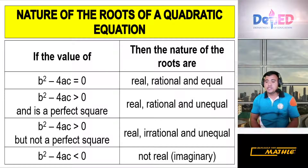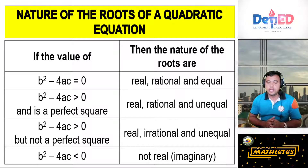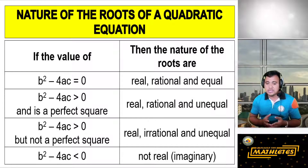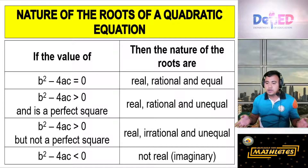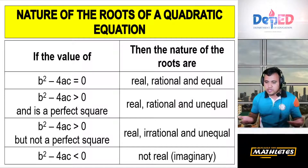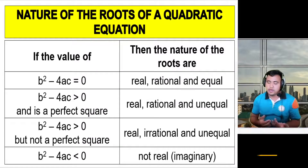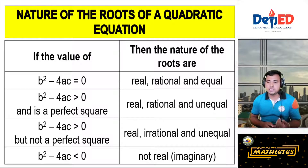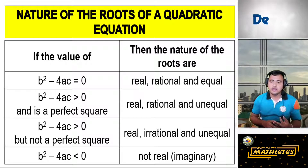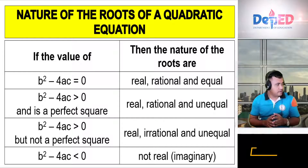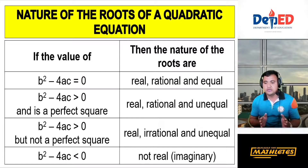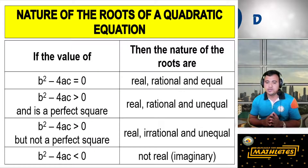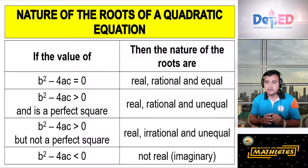If the value of our discriminant is greater than zero and it is a perfect square, the roots are real, rational, and unequal. Perfect square numbers include 1, 4, 9, 16, 25, 36, 49, 64, and so on. You can find perfect square numbers by adding consecutive odd numbers — for example, 1 + 3 = 4, then 4 + 5 = 9. These are numbers whose square root is a whole number.